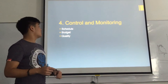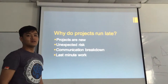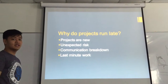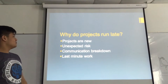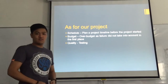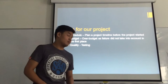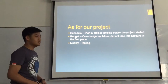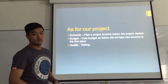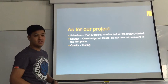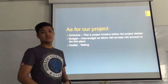The fourth process is control and monitoring, which includes schedule, budget, and quality. There are four factors that cause the project to delay: projects are new, unexpected risk, communication breakdown, and last-minute work. For our project, we planned a project timeline before the project started, so we could finish on time. In terms of budget, we exceeded our estimated budget because we did not account for failures. In terms of quality, we do a lot of testing to ensure quality control.